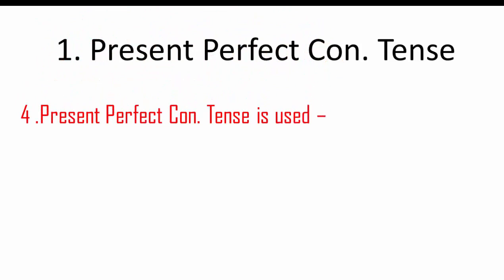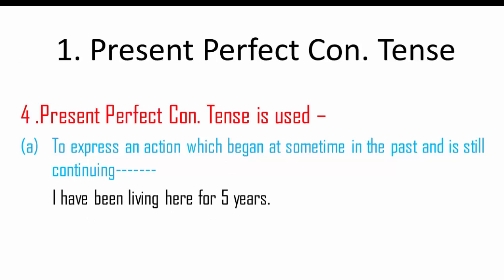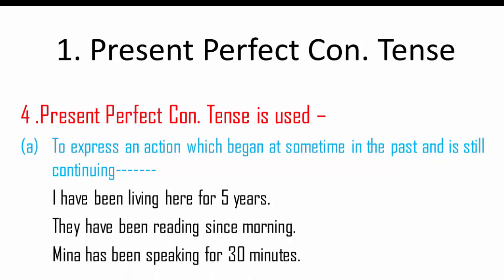Present perfect continuous tense is used to express an action which began at some time in the past and is still continuing. For example: 'I have been living here for five years' — I began to live here five years ago and I am still living here. 'They have been reading since morning' — they started reading in the morning and are still continuing. 'Mina has been speaking for 30 minutes' — Mina started speaking 30 minutes ago and is still continuing.